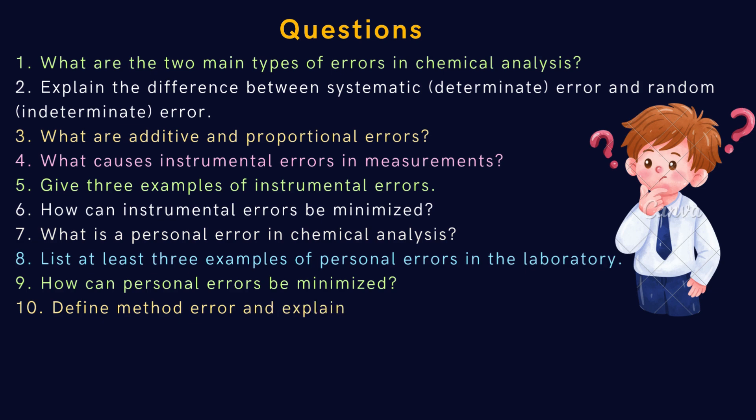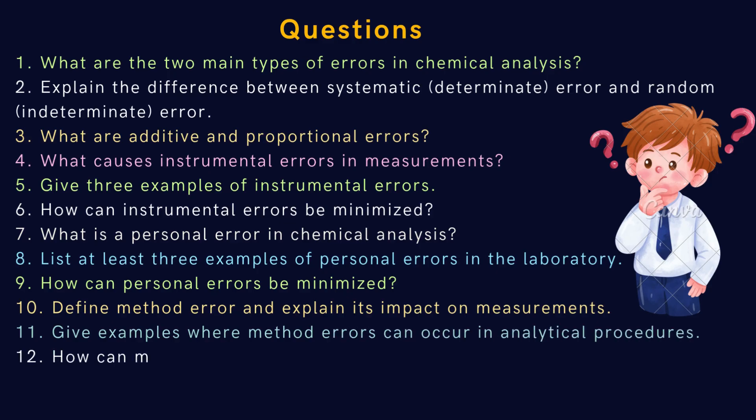Ninth, how can personal errors be minimized? Tenth, define method error and explain its impact on measurements. Eleventh, give examples where method errors can occur in analytical procedures. Twelfth, how can method errors be minimized? Thirteenth, what is a random error and how does it affect measurements?